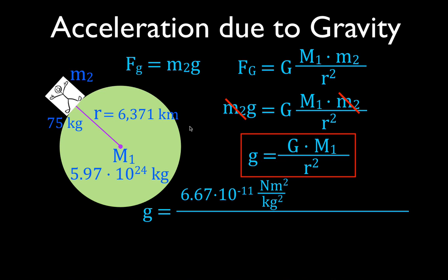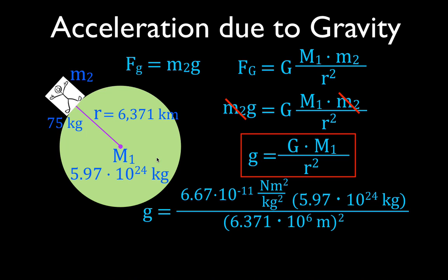So G equals 6.67 times 10 to the minus 11, times the mass of the Earth, divided by the square of the distance from the center — which is the radius of the Earth. I converted the radius from kilometers into meters because the constant uses meters, giving 6.371 times 10 to the 6 meters, squared. If you put all those numbers into your calculator, you get that G at the surface of the Earth is 9.81 meters per second squared.